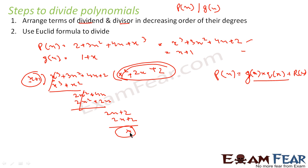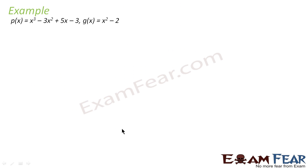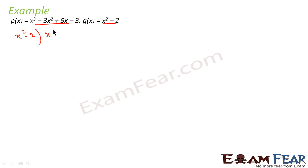Let's take another example. Suppose p(x) = x³ − 3x² + 5x − 3 and g(x) = x − 2. The first step is to arrange in descending power — it's already arranged, so we skip that. The second step is to apply the Euclid formula. So let's set up the long division with x − 2 dividing x³ − 3x² + 5x − 3.